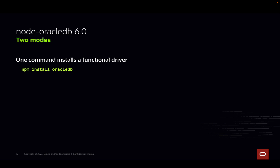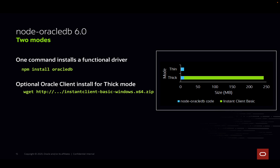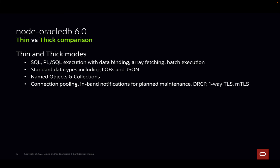We've seen how easy it is to install Node Oracle DB. Using the optional Instant Client libraries enables what we call thick mode, which gives additional features over the default thin mode. The Instant Client basic package adds about 240 megabytes on Windows, so thin mode has a definite size and install advantage. Thin mode is fantastic for most users, with great data type and connection support.